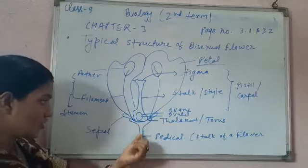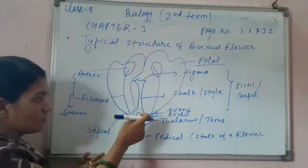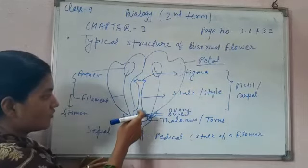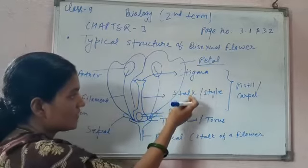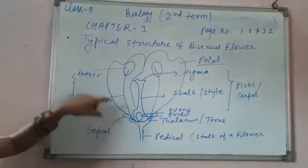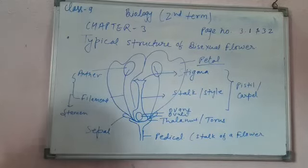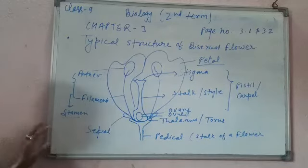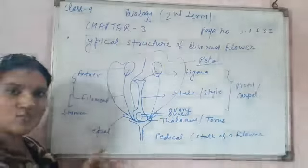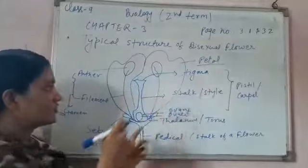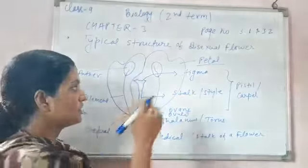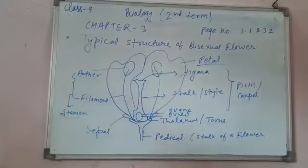To recap: the stalk of the flower is known as pedicel. The swollen portion on which all the floral whorls are arranged is known as thalamus or torus. The female part consists of stigma, style, and ovary — within the ovary, ovule is present — and together these are known as pistil or carpel. The male part consists of anther and filament, together known as stamen. The leaf-like structure at the base is sepal, whose function is to protect the flower in bud condition. The colorful part is the petal, whose function is to attract insects for pollination.